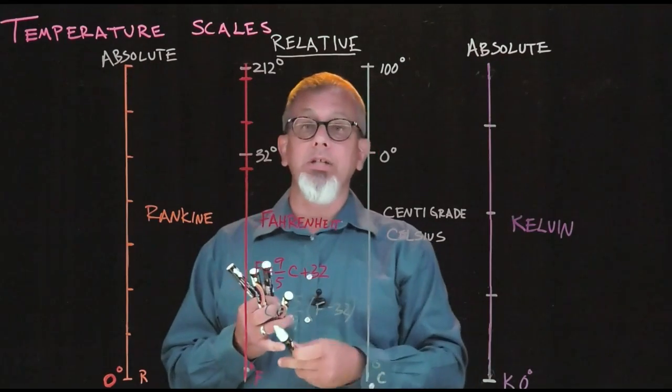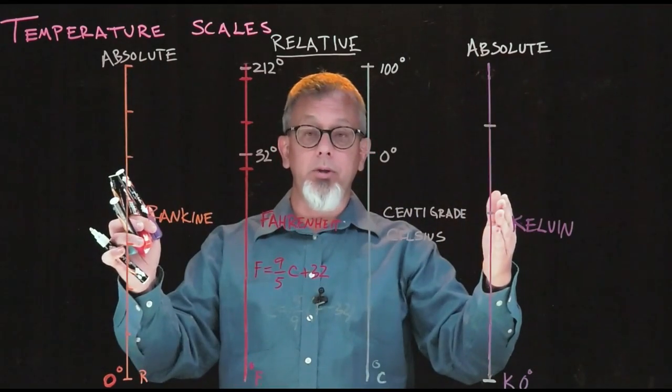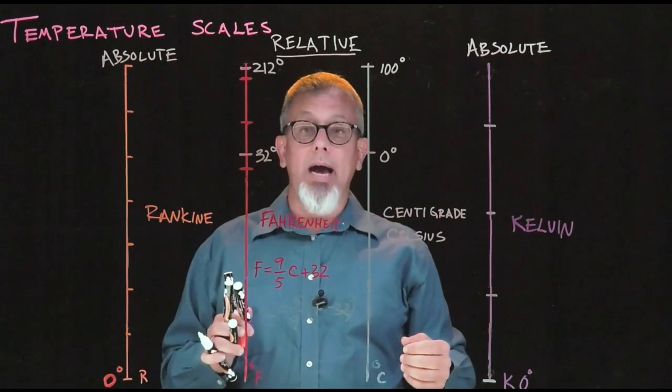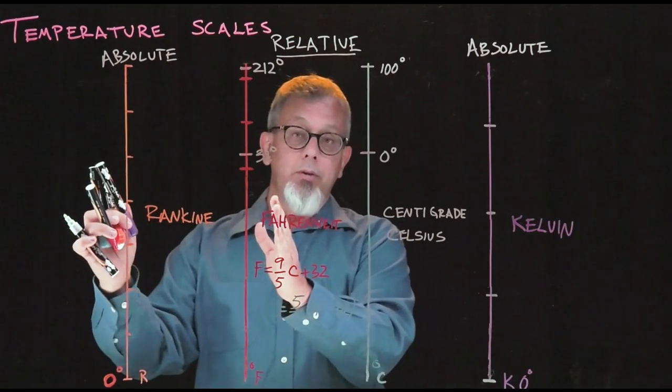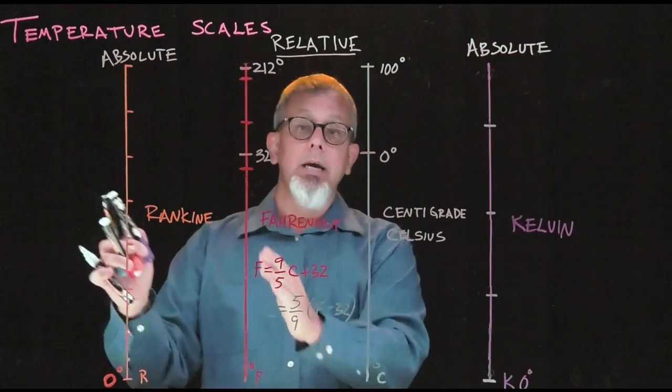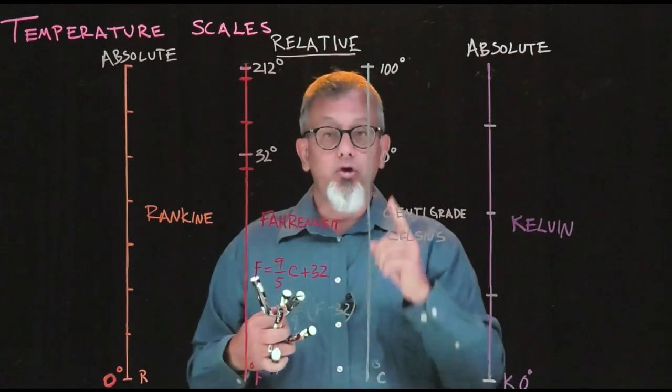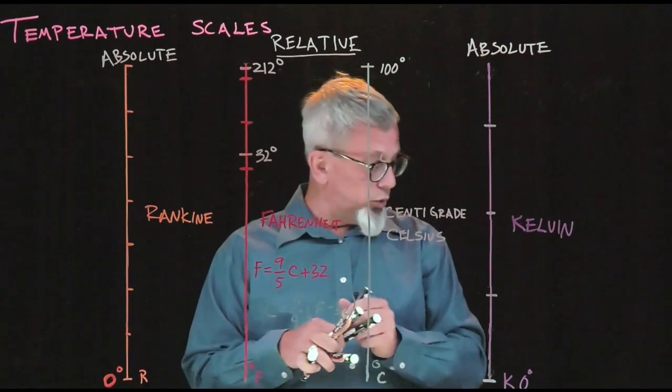Now we have four systems, two of them relative, two of them absolute. We also have two systems that are associated with the imperial system, or the system that's used in the U.S., and two systems that are associated with the metric system.